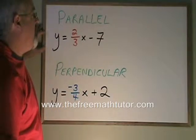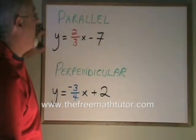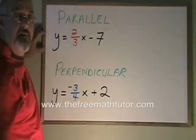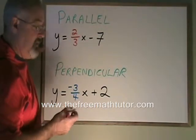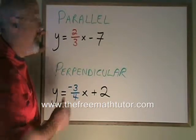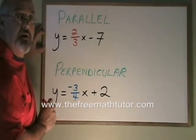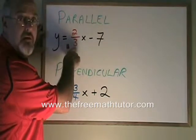If we want to find the slope of another line that is parallel to this one, it will have the same slope as this one. So using the y equals mx plus b form of the straight line equation, I can see that the slope of the given line is 2 thirds.